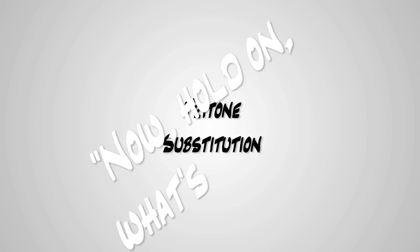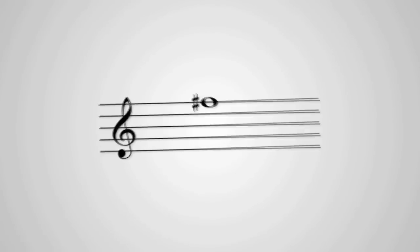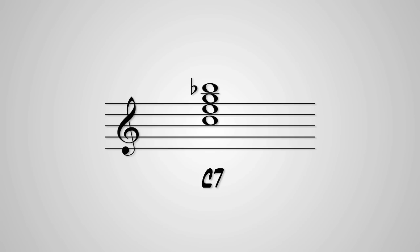Now, hold on — what's a tritone? Well, simple. It's an interval that is exactly half an octave, and no one really likes it. With that said, jazz musicians love tritones. For example, the C7 chord. Real jazzy, right? Well, listen closely — do you hear it? That is the devil's interval, the tritone. The 3 and 7 of a dominant 7 chord are always a tritone away.